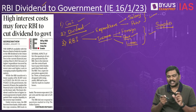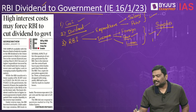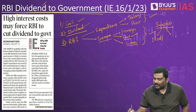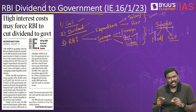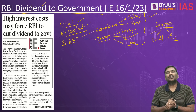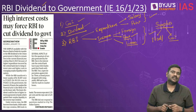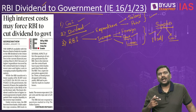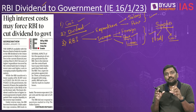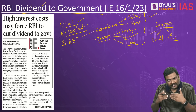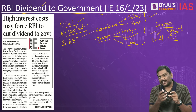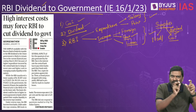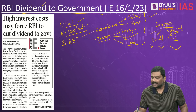RBI keeps part of the surplus with itself and gives the remaining to Government of India in the form of dividend. Why does RBI keep part with itself? RBI maintains a large number of funds, and in case of contingency it would require certain funds. The committee which recommended the ratio in which surplus is kept versus given to government is the Bimal Jalan Committee — remember this name as it is frequently cited in newspapers.